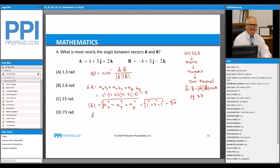And the length of vector b is equal to minus 1 squared, plus 3 squared, plus minus 2 squared, which is also the square root of 14.